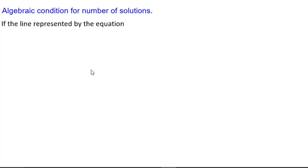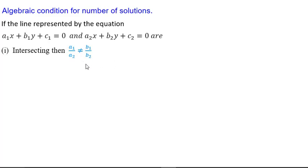Let us now discuss algebraic conditions for the number of solutions. There are three possible cases: unique solution, no solution, or infinitely many solutions. Without using a graph, we can determine the case using algebraic conditions. If the lines represented by equations a1x + b1y + c1 = 0 and a2x + b2y + c2 = 0 are intersecting, then a1/a2 ≠ b1/b2. You check these two ratios — if they are not equal, the lines are intersecting and we have a unique solution, meaning the lines are consistent.